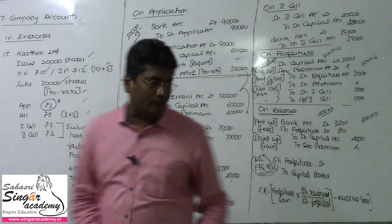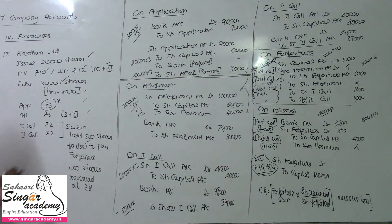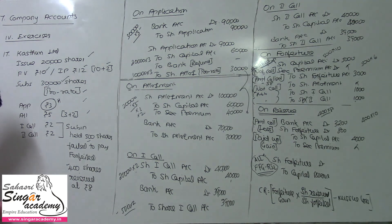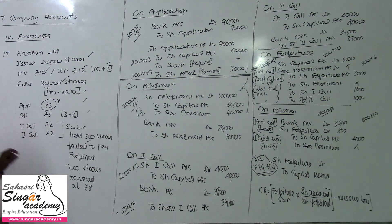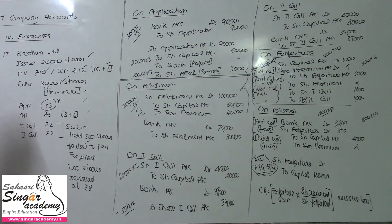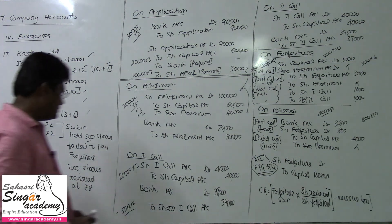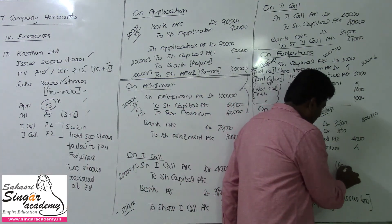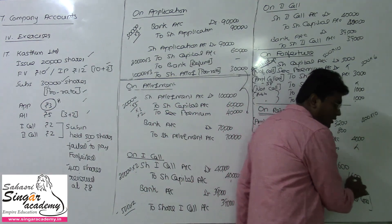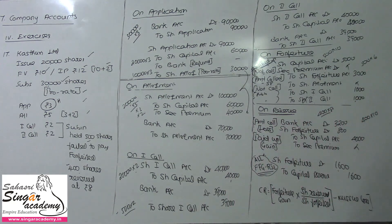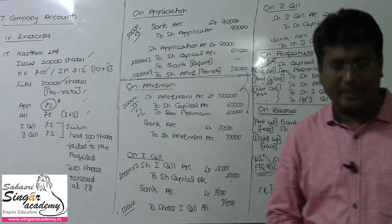For the capital reserve transfer, we follow the formula: Forfeiture gain of ₹3,000 multiplied by (shares reissued 400 / shares forfeited 500) equals ₹2,400. From this, deduct the reissue loss of ₹800. So ₹2,400 minus ₹800 equals ₹1,600 is transferred to Capital Reserve. This matches the book answer, and we have now corrected everything.